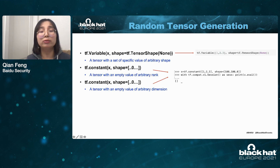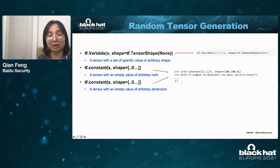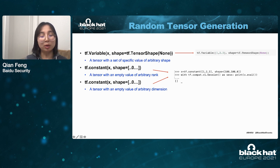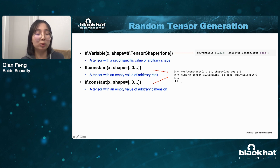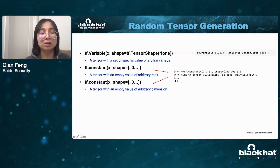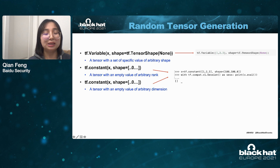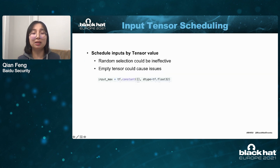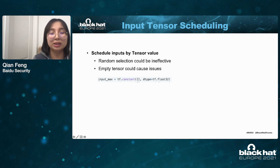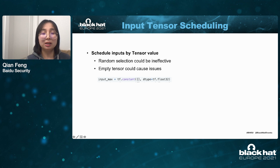However, what if we do not want to generate a tensor so randomly? What if we want to generate a tensor with some prefixed properties? We can utilize features defined in TensorFlow. For example, if we want to generate a tensor with a specific value but arbitrary shape, we can use the variable operation and set its shape to none. If we want to generate an empty tensor for arbitrary rank or dimension, we can use the constant operation by setting its dimension to zero. In this case we can generate as many tensors as we want, but scheduling is hard — we need some preference, otherwise it will stall without any coverage improvement.